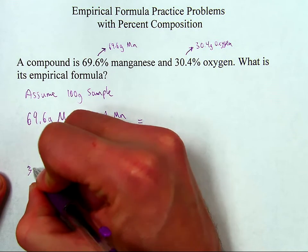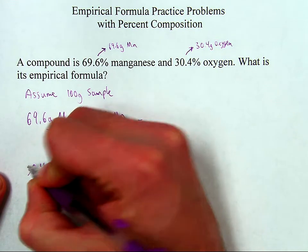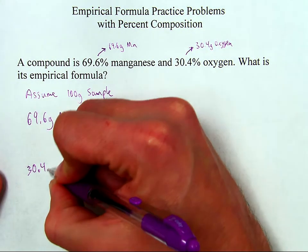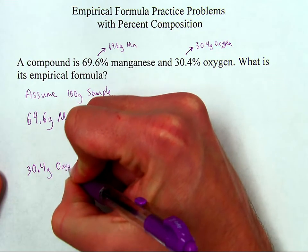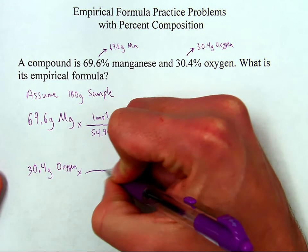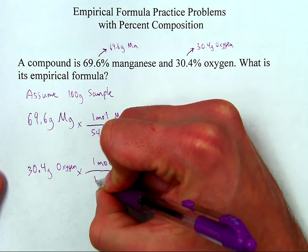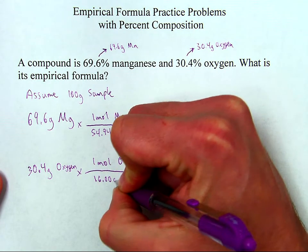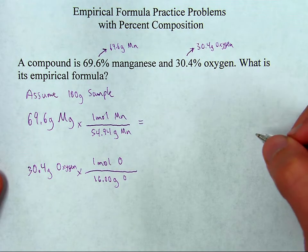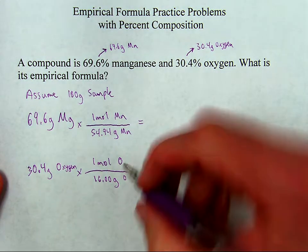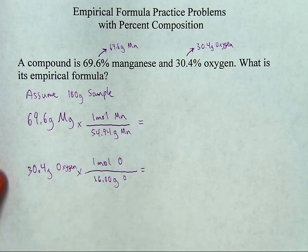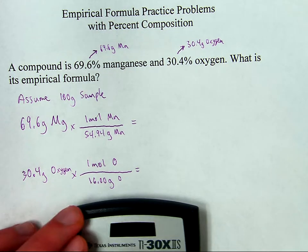So for the 30.4 grams of oxygen, I will also convert that to moles of oxygen, with a molar mass of 16.00 grams per mole of oxygen. So this will allow me to get moles of oxygen and moles of manganese.